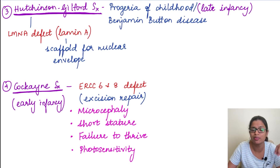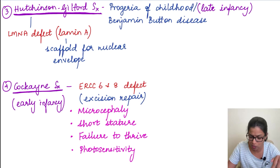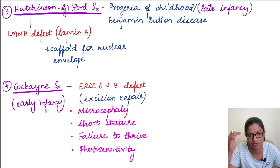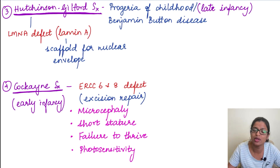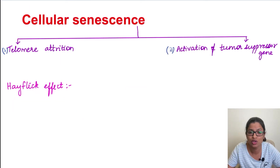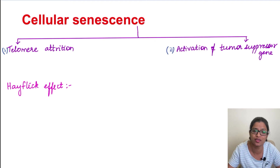The fourth example is Cockayne syndrome, where there is an excision repair defect involving genes ERCC6 and ERCC8. The patients present very early, just after birth in early infancy, and the characteristic presentation is microcephaly with photosensitivity and failure to thrive. So we have seen about the first mechanism — DNA damage — and how DNA repair defects can lead to premature aging.